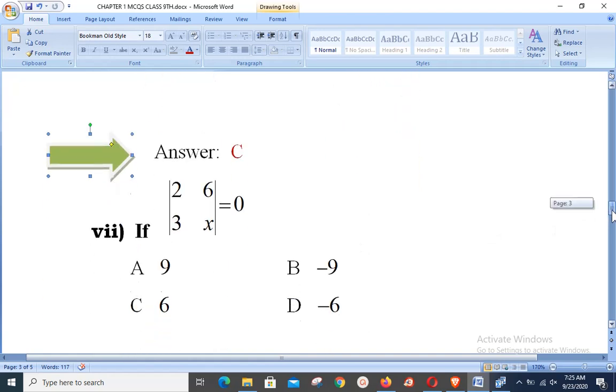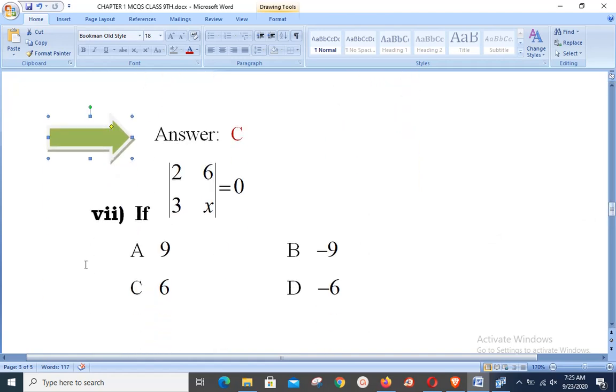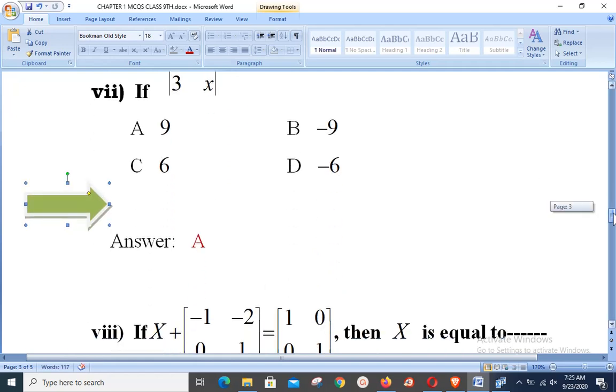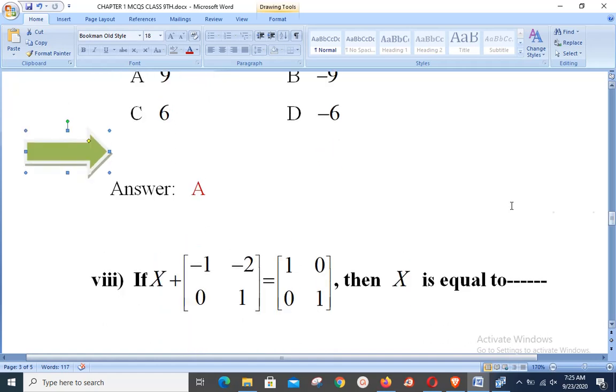Next objective, that is number 7: if determinant of [2 6; 3 x] is equal to 0, what will be the value of x? What we need to do: we multiply 2 with x and then minus 6 into 3. That is, we have 2x minus 18 is equal to 0. Shifting 18 to the other side, we have 2x is equal to 18. Dividing both sides by 2, we have x is equal to 9 as the answer.